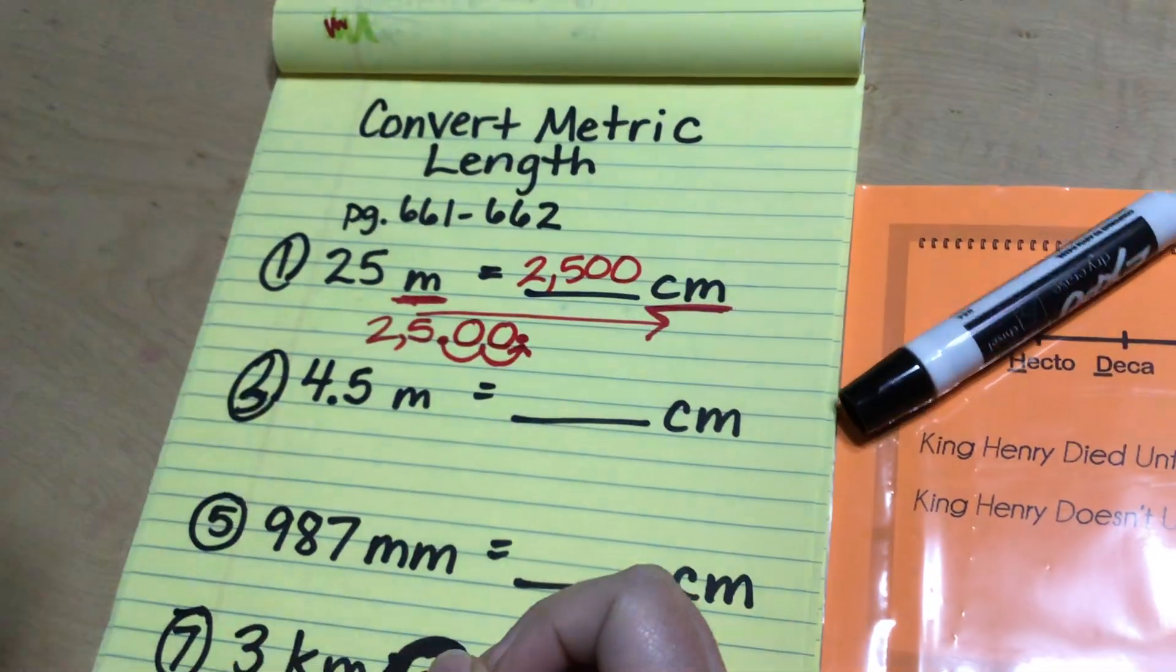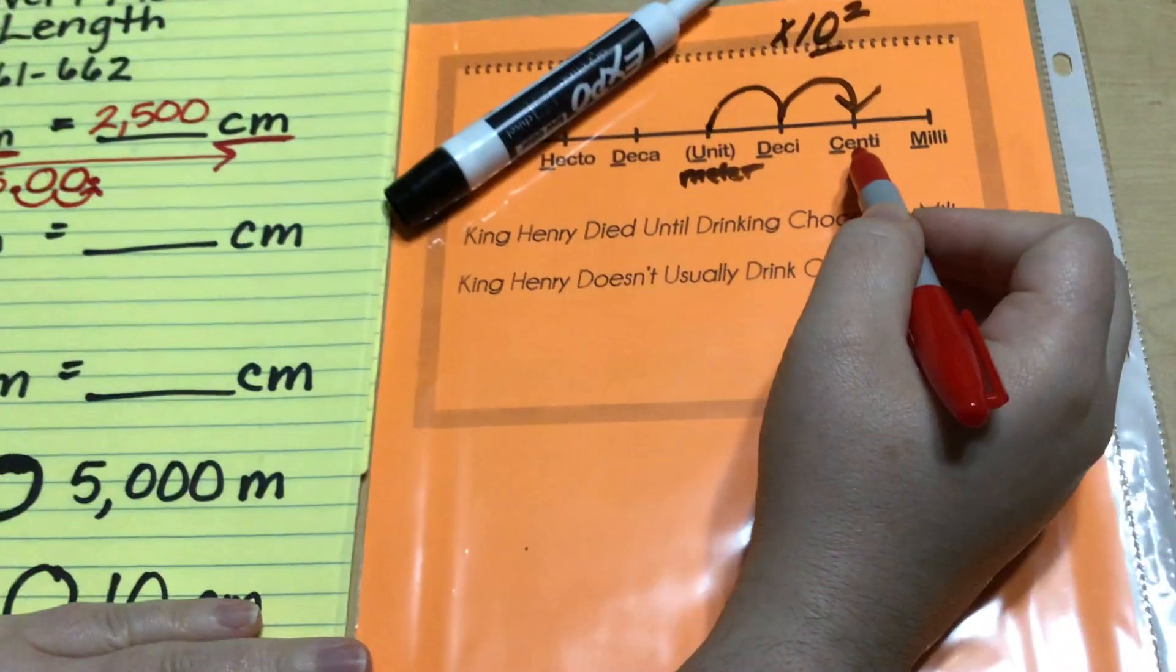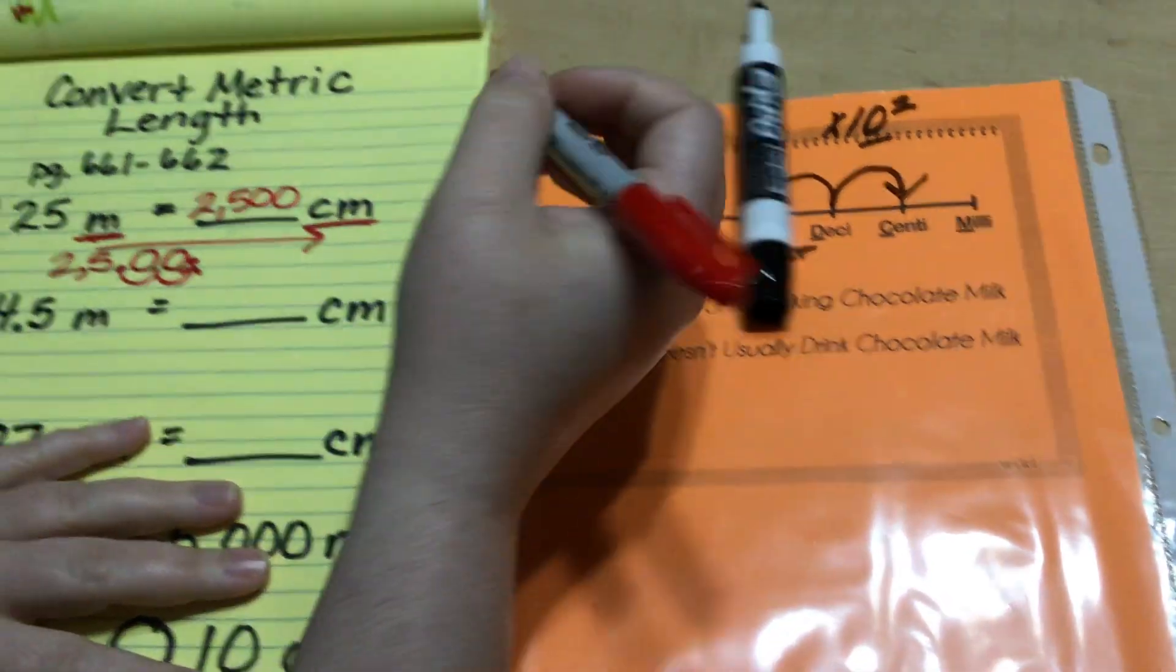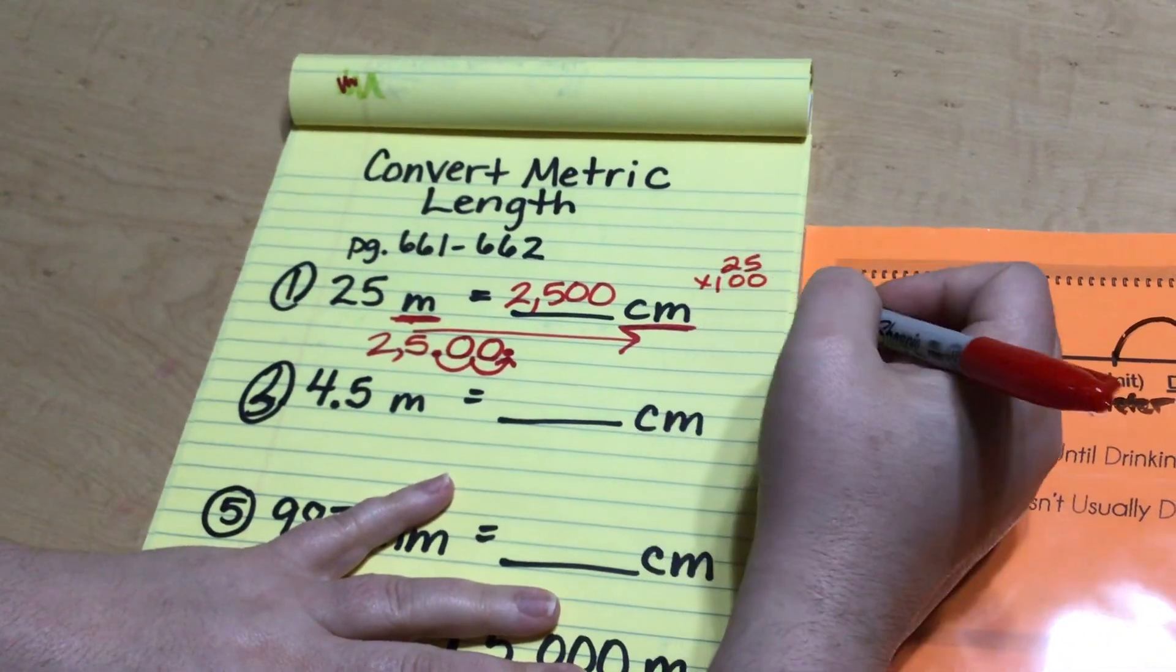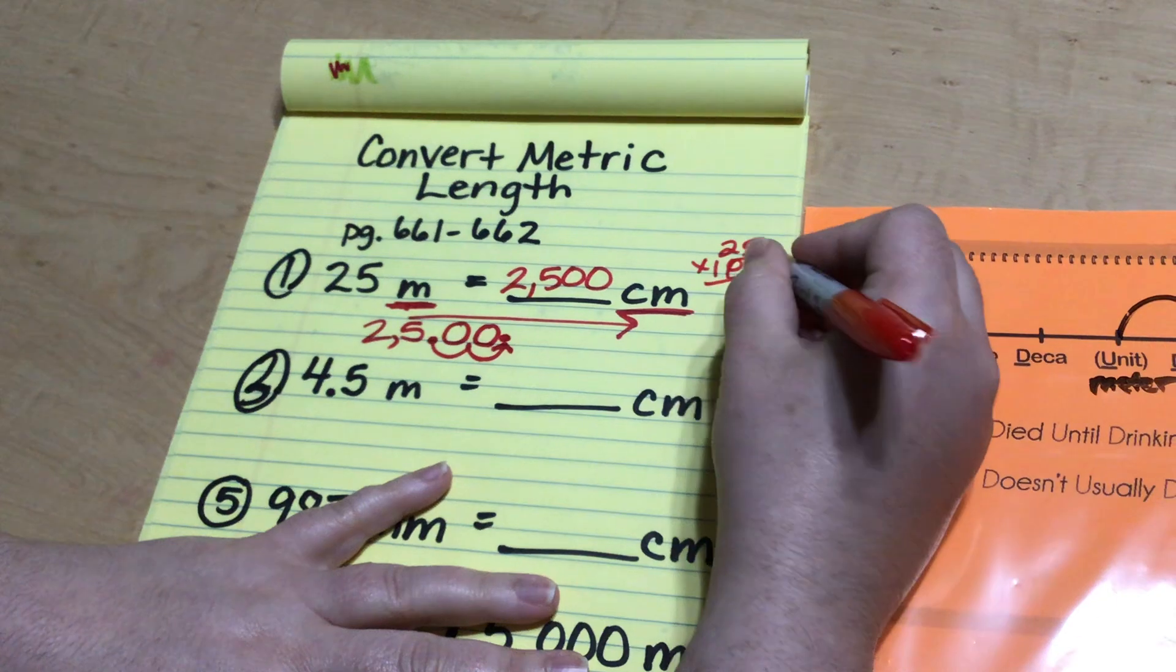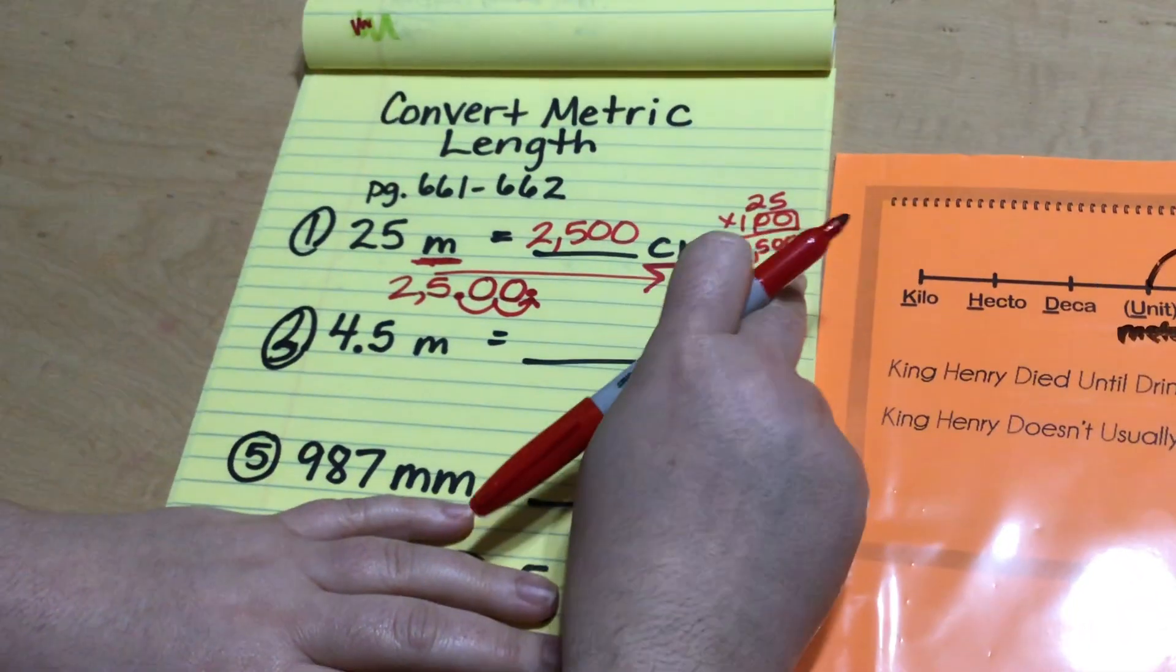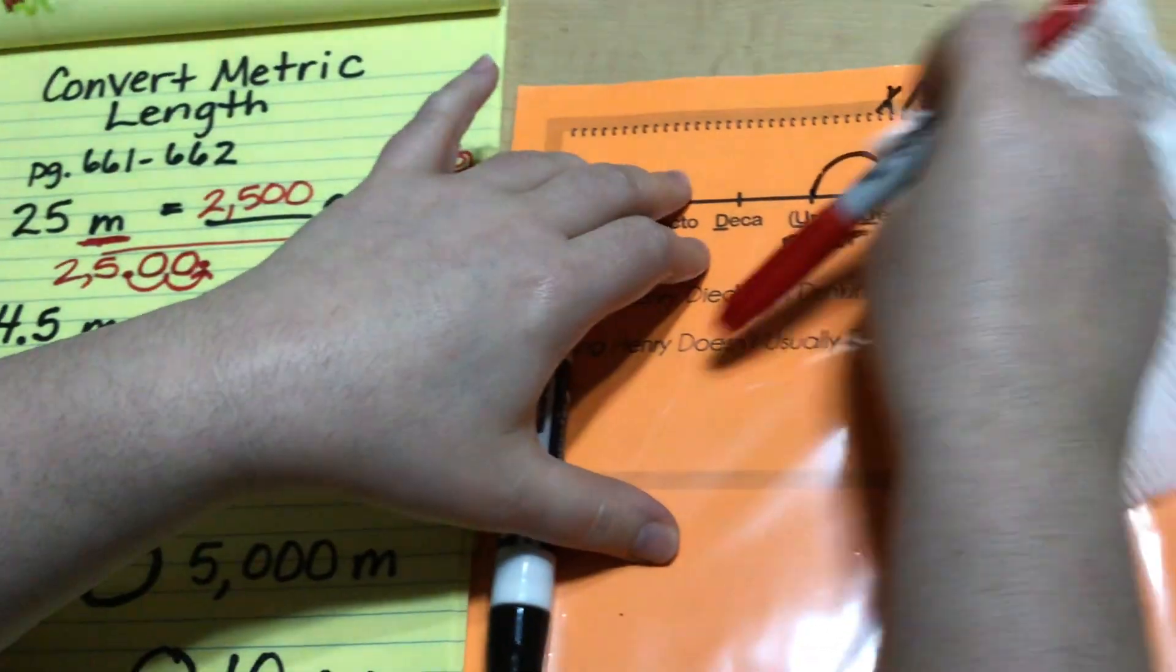Why does this work? Well it works because there are 100 centimeters in a meter. So that's kind of like saying 25 times 100. That would be 25 annexed two zeros, 2,500. Now do we have to do it that way? No. It's way easier to move the decimals around. So that's what we'll try to do.